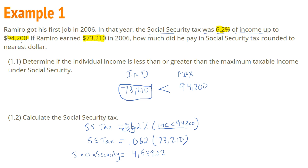Now it wants it rounded to the nearest dollar. We stop at the decimal point, look at the digit after — it's 0. Since 0 is less than 5, we drop the decimal portion and we get $4,539 as the social security tax paid that year.